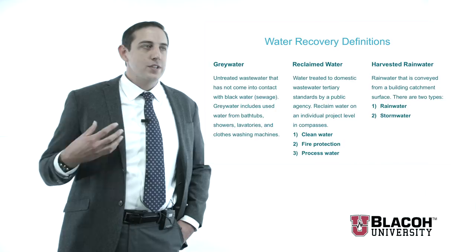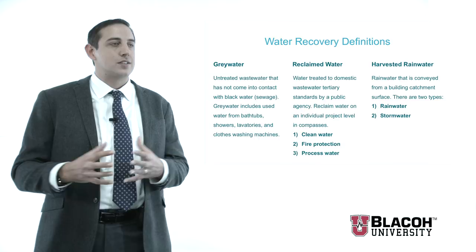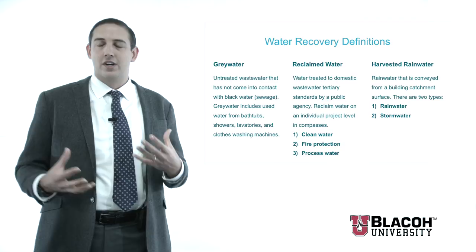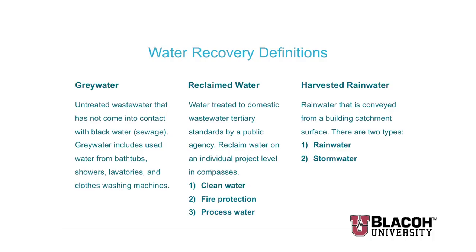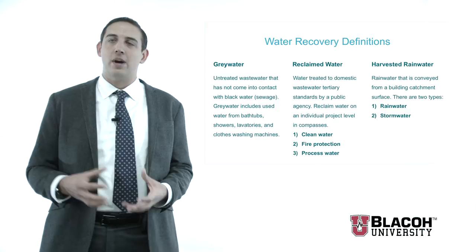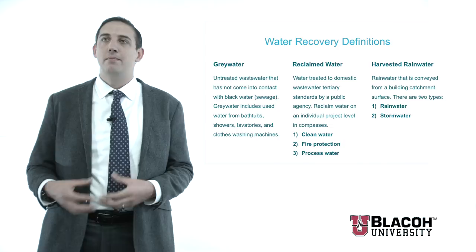I always like to open up with a brief understanding of what we're talking about. One of the things that comes up a lot when doing these types of systems is the nomenclature. We break it down into three distinct classifications. Most of you are familiar with gray water. Gray water is untreated wastewater that has not come in contact with black water or sewage. This is essentially any water from hand washing to dishwashers to laundry machines that has not been used in any kind of food preparation. Food preparation is classified as dark gray water.